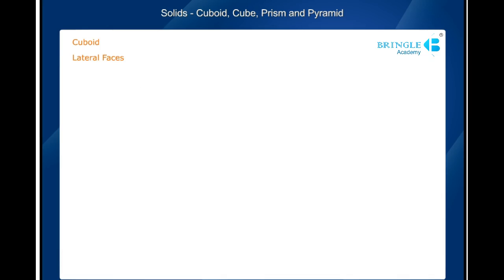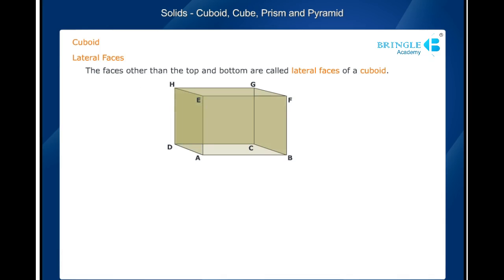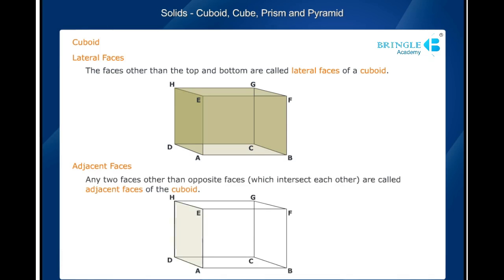Lateral faces. The faces other than the top and bottom are called lateral faces of a cuboid. Adjacent faces. Any two faces other than opposite faces are called adjacent faces of the cuboid.